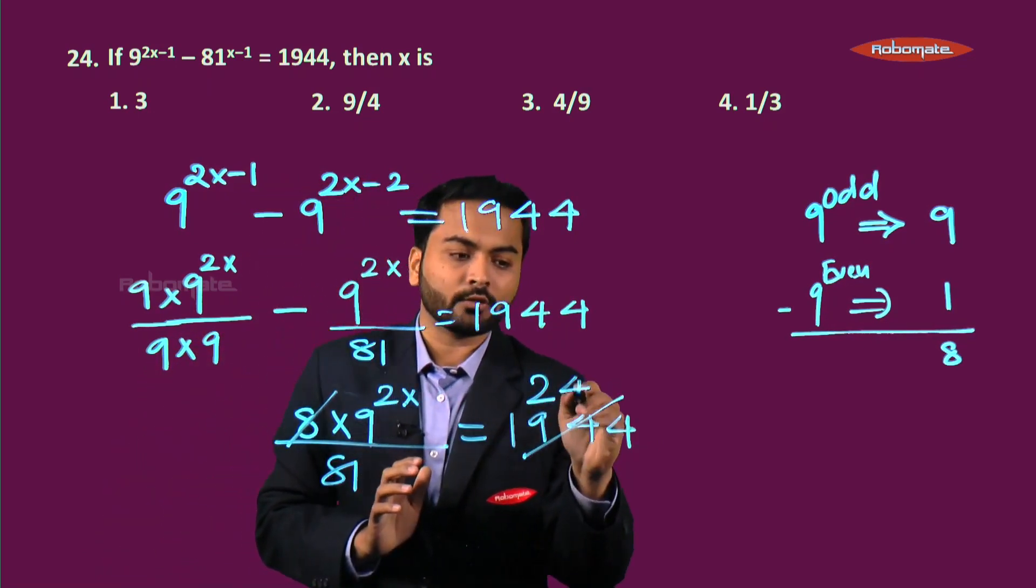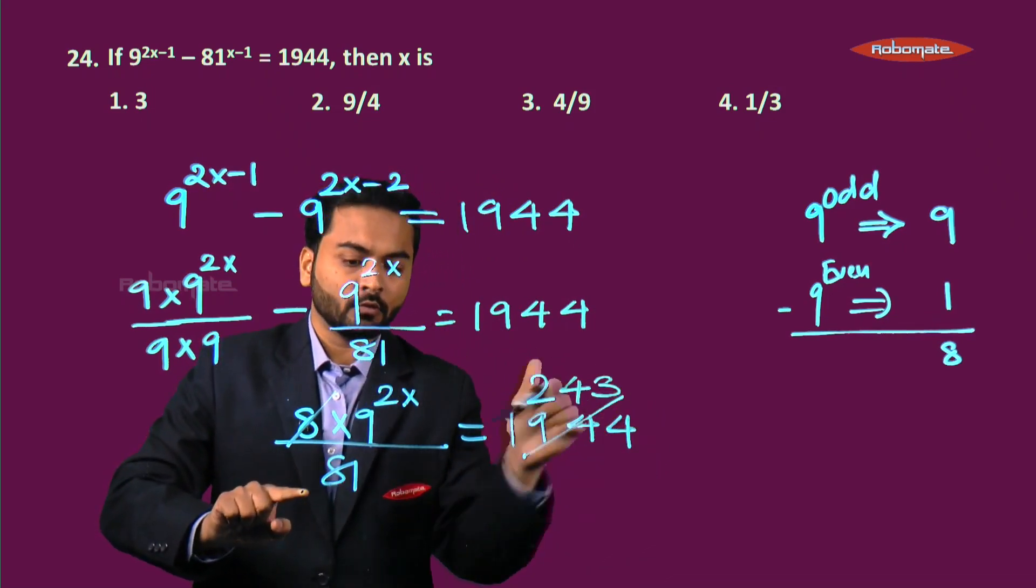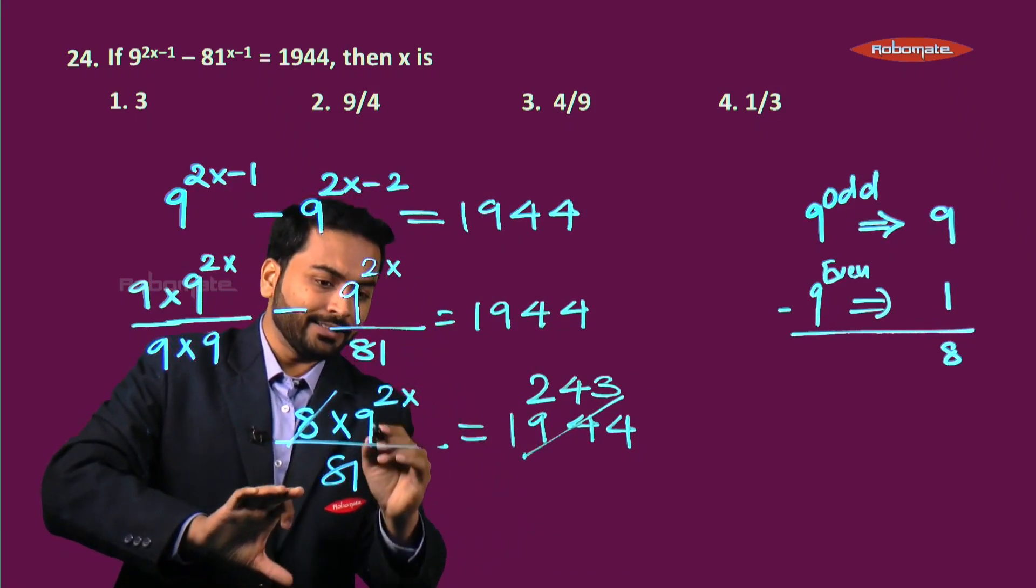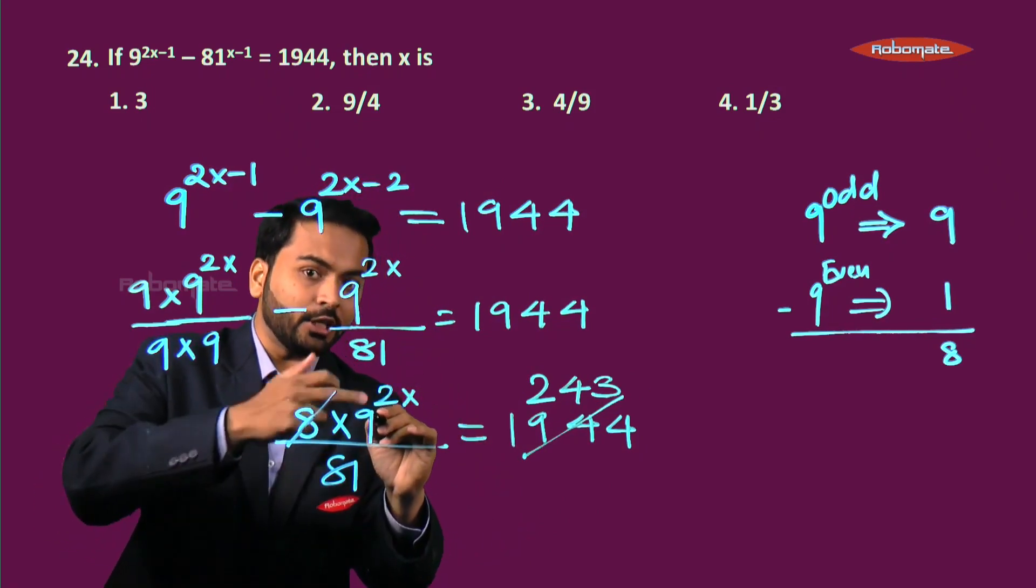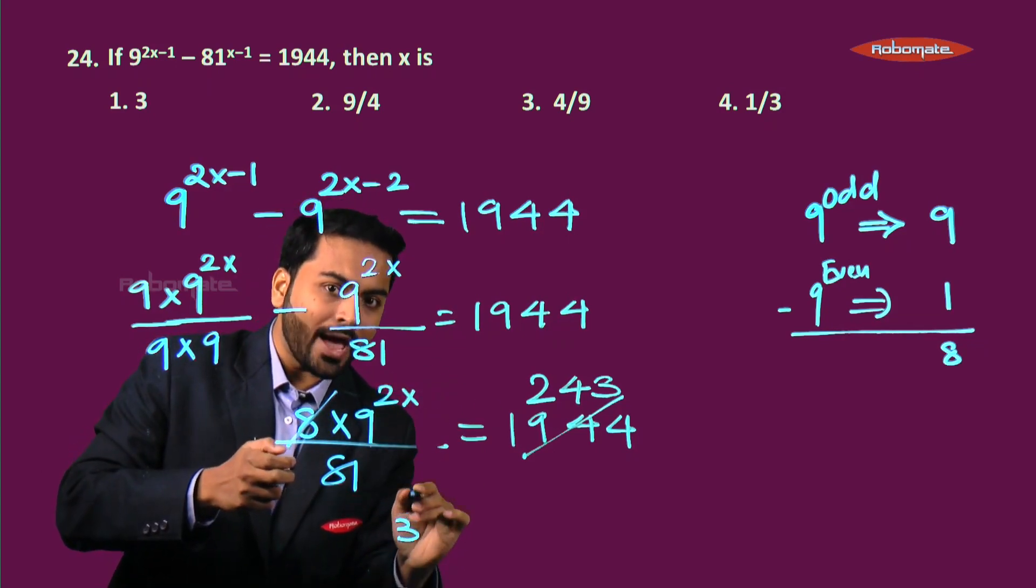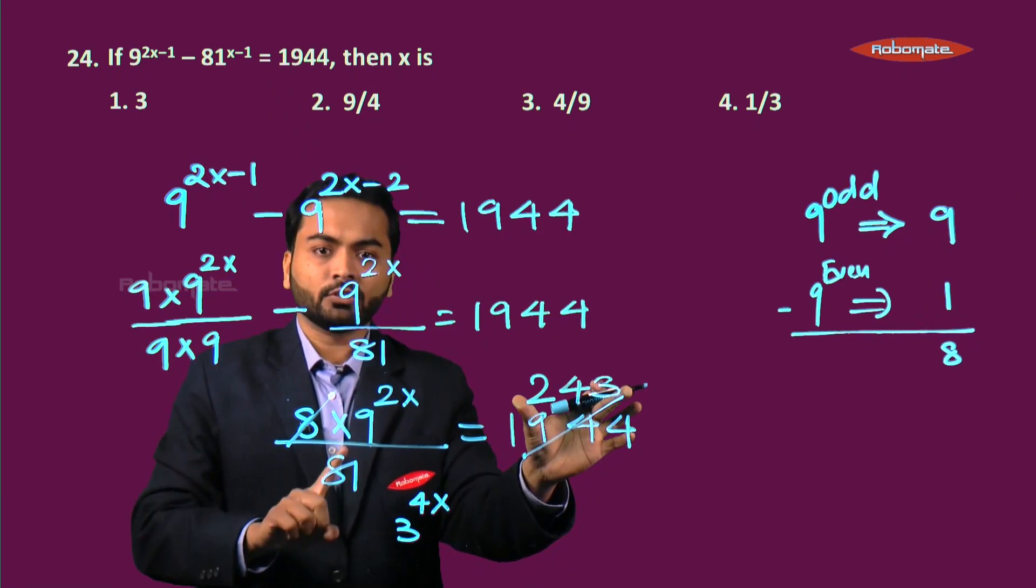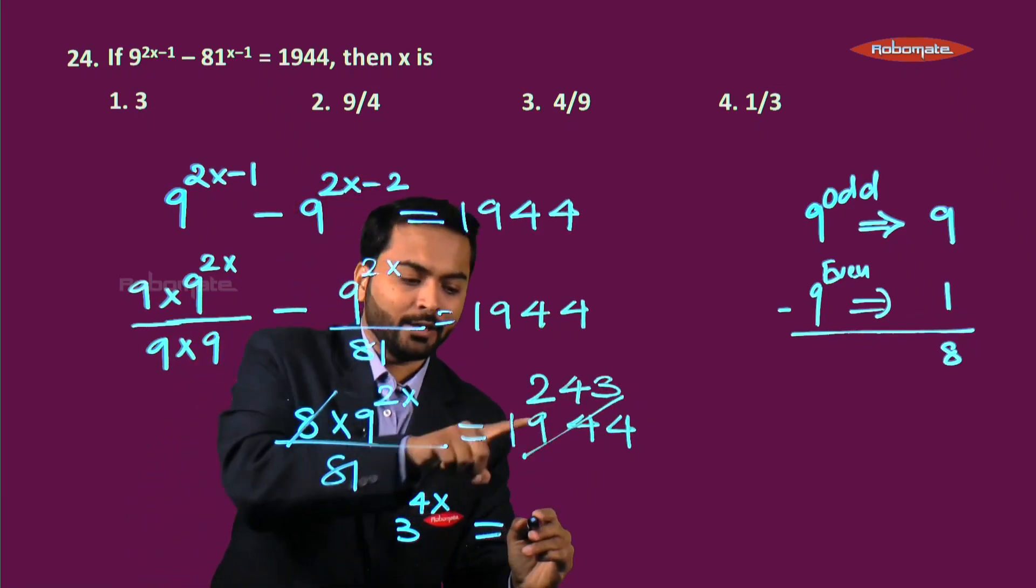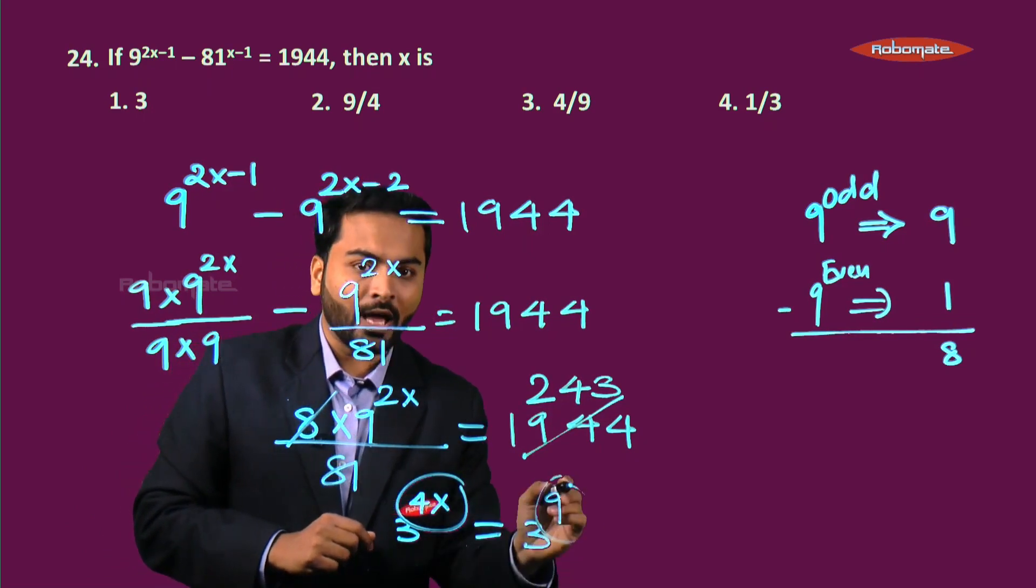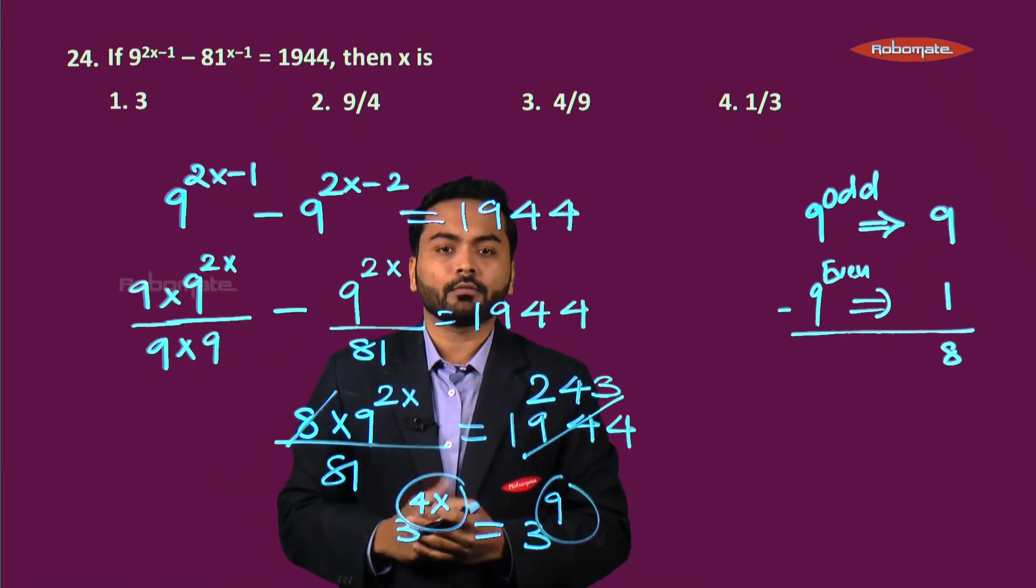Now on dividing this value, what I get is 243. This is 3 raised to 5, this is 3 raised to 4. So now if you want to simplify this further, 9 can be written as 3 squared and this is 2x. So this is 3 squared raised to 2x, which can be written as 3 raised to 4x. This is 3 raised to 5, this is 3 raised to 4. This gets multiplied, gives me 3 raised to 9. So now I have 4x equals 9. If I simplify this, I get x equals 9 by 4. That's the answer.